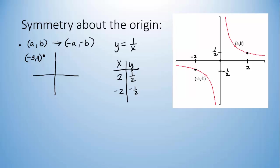What's another point? You just think opposite of negative 3, opposite of 4, so there must also be a point at (3,-4).